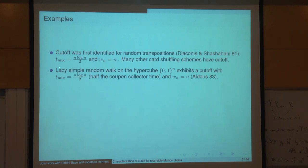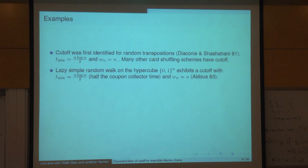A maybe more basic result proved a tiny bit later was that lazy simple random walk on the hypercube also has mixing time N log N over 2, but for a slightly different reason. There's still some coupon collector involved there.